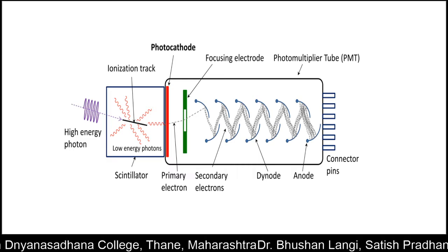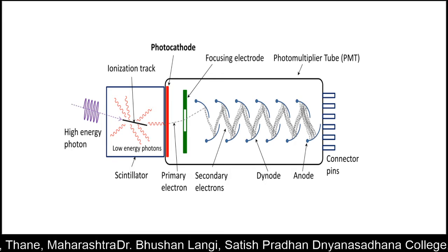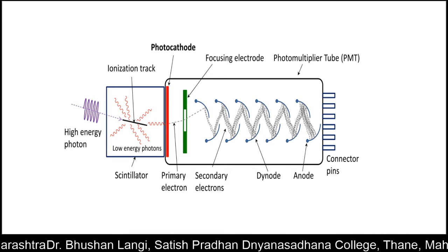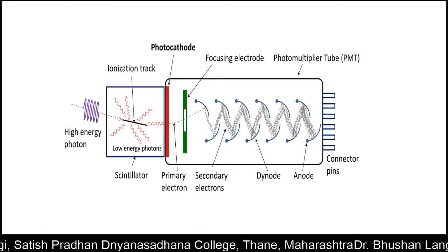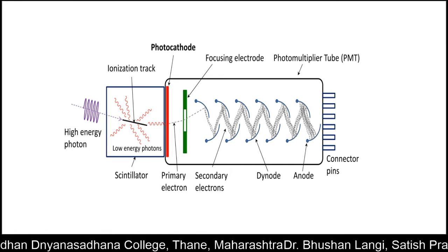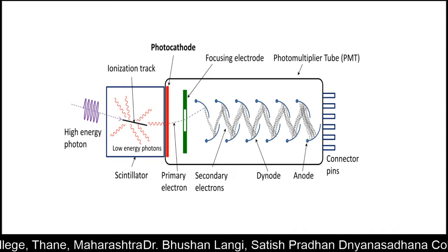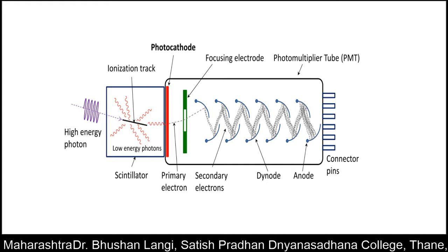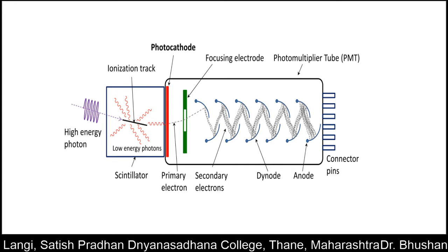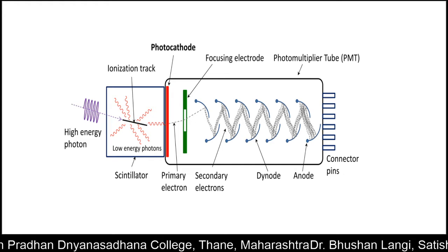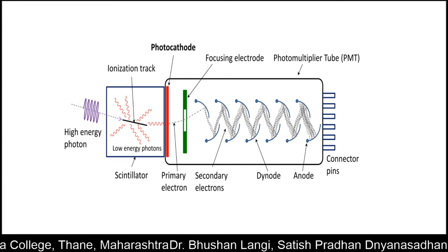Such scintillations are then incident on the photomultiplier tube, where they initially hit the photocathode. Once incident on the photocathode, electrons are generated, which are known as primary electrons. These enter into the PMT tube through the focusing electrode, also known as a mica window.